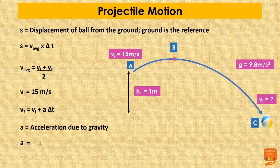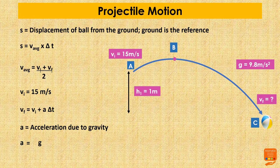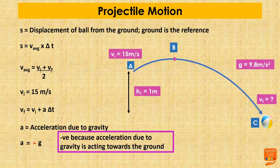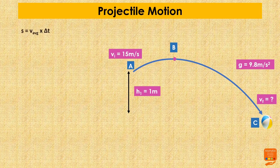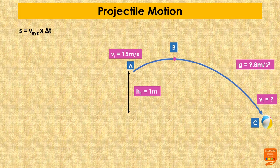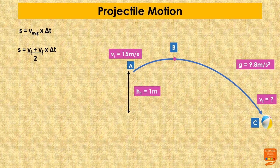Because we are taking the ground as reference, acceleration due to gravity acts downwards and anything acting downwards we denote as negative. So acceleration due to gravity is negative in this case. We now insert the value of average velocity into the displacement equation: S equals average velocity multiplied by change in time, and replacing average velocity with (Vi + Vf) / 2, S becomes (Vi + Vf) / 2 multiplied by change in time.